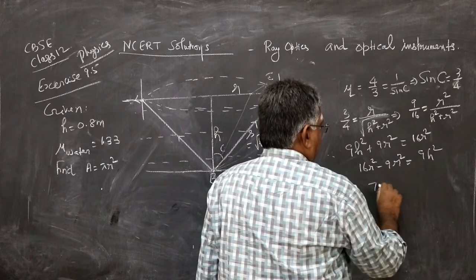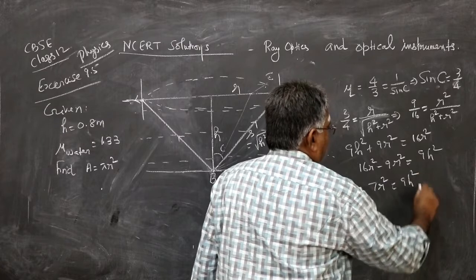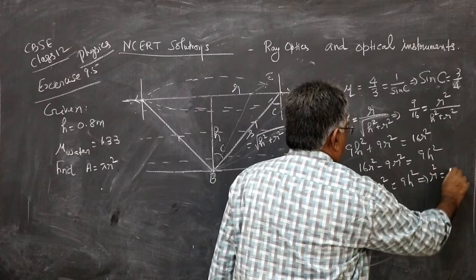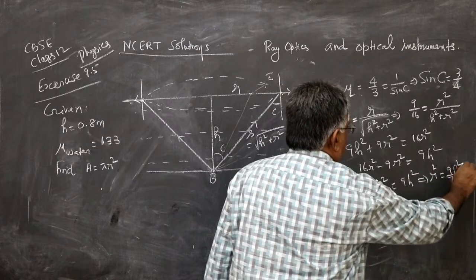Therefore, 16R squared minus 9R squared is 9H squared. So 7R squared equals 9H squared, which gives you R squared as 9 by 7H squared.